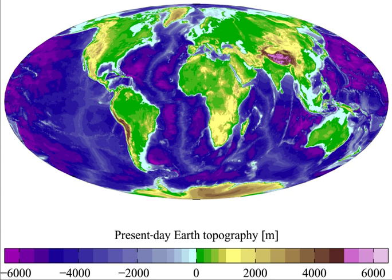Land, sometimes referred to as dry land, is the solid surface of Earth that is not permanently covered by water. The vast majority of human activity throughout history has occurred in land areas that support agriculture, habitat, and various natural resources.